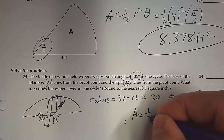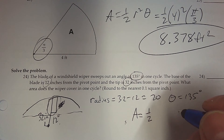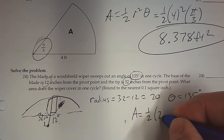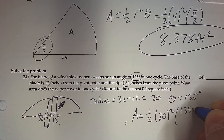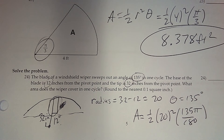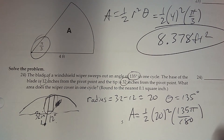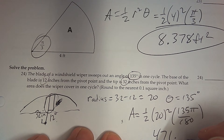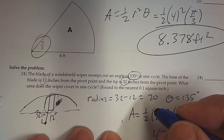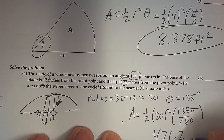Use the sector area formula: one half times the radius squared times the angle in radians. Convert 135 degrees by multiplying by pi over 180. So 0.5 times 20 squared times 135π divided by 180. The answer is 471.238, and that's in inches squared.